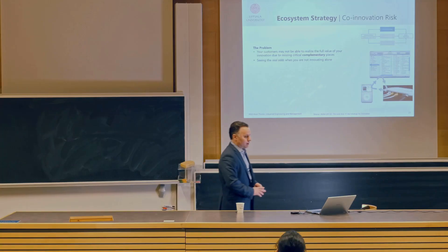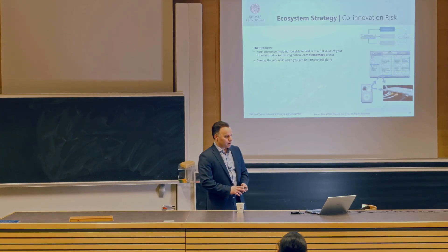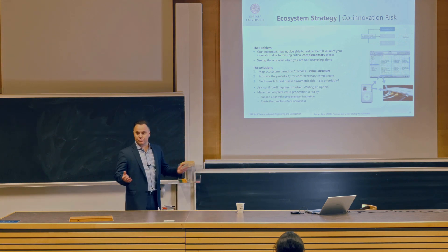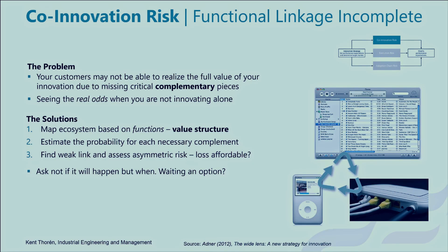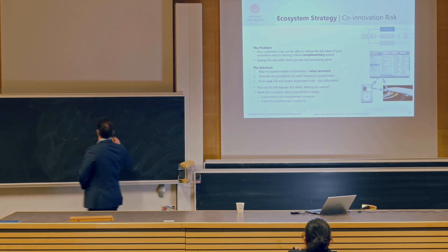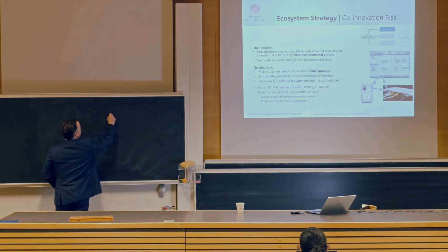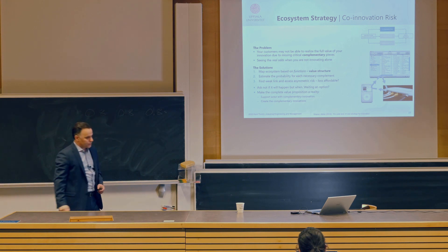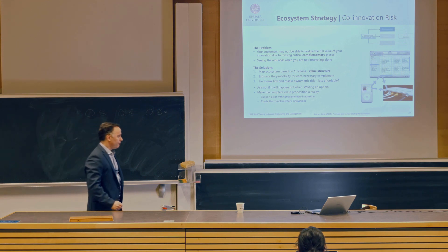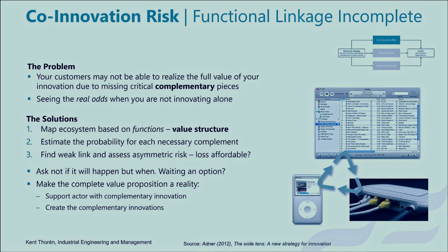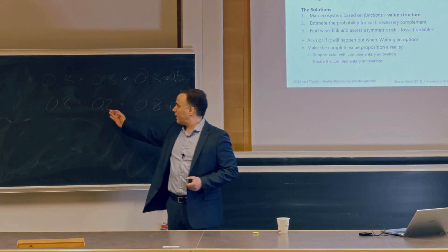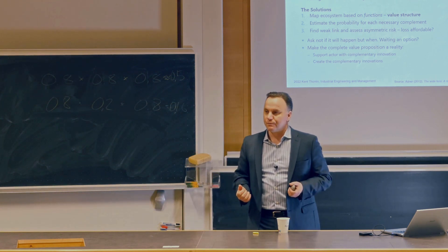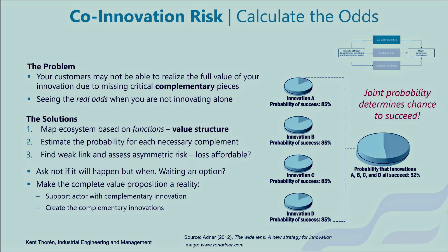Whenever you're thinking about a product or service, you need to map the ecosystem based on the value structure — what functions are needed, what things are not in place — and estimate the probability for them to be in place. If you have three co-innovations needed and they're all at 80% probability, what is the combined likelihood? It's just over 0.5, because probabilities multiply. One weak point really breaks the whole thing. So you can go in and support the actor supposed to do this, or try to do that part yourself.